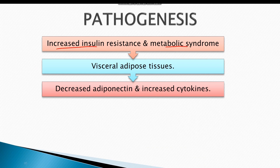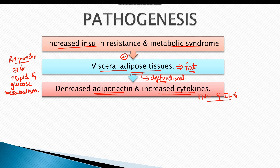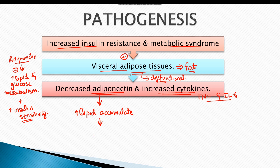Increased insulin resistance and metabolic syndrome result in increased visceral adipose tissue, meaning an increase in total fat around the waist. This additional fat deposited around the waist is dysfunctional. This dysfunctional adipose tissue does not secrete enough adiponectin; rather, it secretes increased levels of cytokines such as TNF and interleukin-6. In normal circumstances, adiponectin activates lipid and glucose metabolism in the liver and increases insulin sensitivity. A decrease in adiponectin results in inefficient lipid metabolism, causing lipid accumulation inside the hepatocytes and resulting in steatosis.